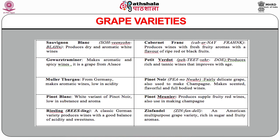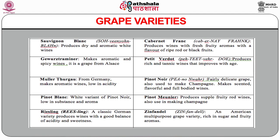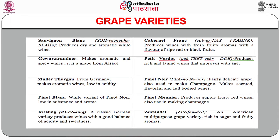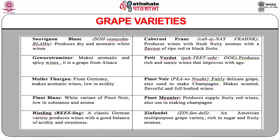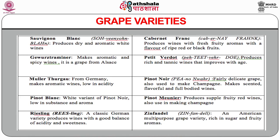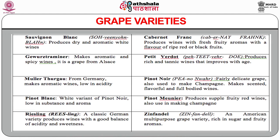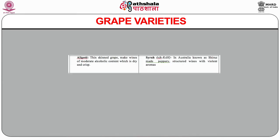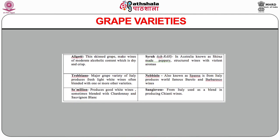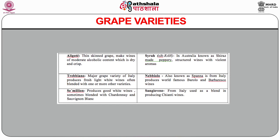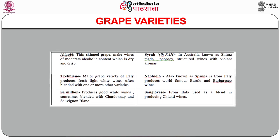Pinot Blanc — white variant of Pinot Noir, low in substance and aroma. Pinot Meunier produces supple fruity red wines and is also used in making champagne. Riesling — a classic German variety — produces wines with a good balance of acidity and sweetness. Zinfandel — an American multi-purpose grape variety rich in sugar and fruity aromas. Aligoté — thin-skinned grape that makes wines of moderate alcoholic content, dry and crisp. Syrah — in Australia known as Shiraz — makes peppery, structured wines with violet aromas.